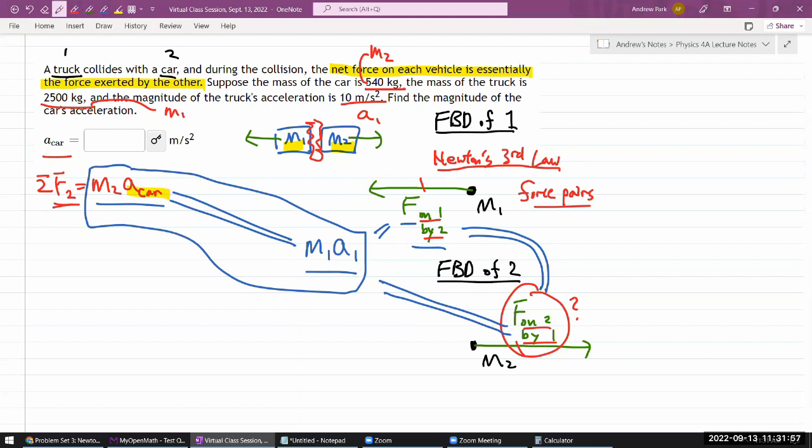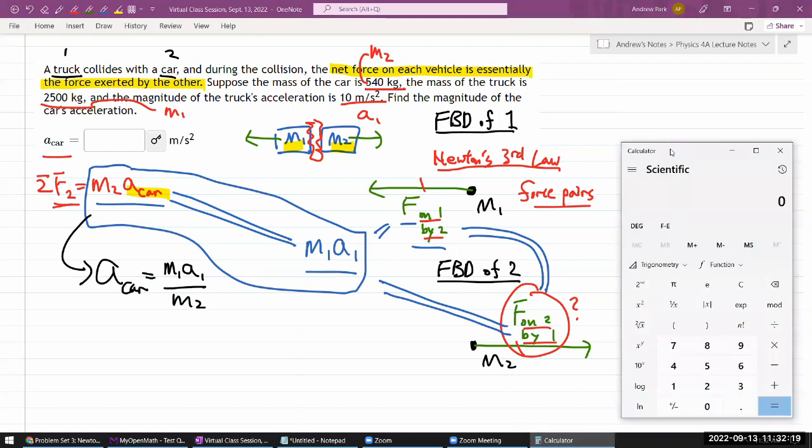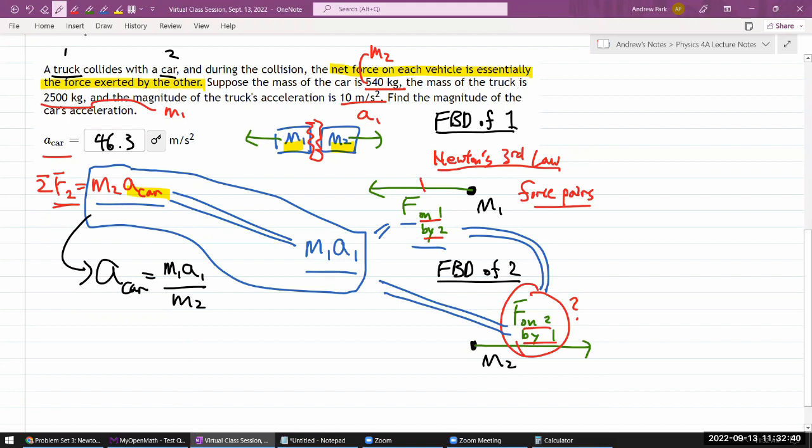This is our equation, and staring at it, we have one unknown here, so we should be able to solve for it. The acceleration of the car is M1 times A1 divided by M2. I think I should be able to plug in all the numbers and get a numerical answer. M1 is 2,500 kilograms times A1, 10 meters per second squared, divided by M2, 540 kilograms.